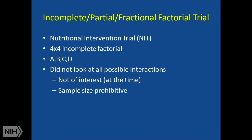Then you run into incomplete, partial, or fractional factorial trials — depending on where you train, it's labeled one of these three. The nutritional intervention trial is an example: they had four different types of micronutrients and didn't want to look at all possible interactions. That study ended up with maybe 20,000 to 30,000 people, looking at only certain combinations. You have to make sure you have the combinations you need for the analyses you care about. The problem is, in the end, people want you to look at certain interactions or combinations that aren't in there — so you have to think hard in advance about what you want to leave out.